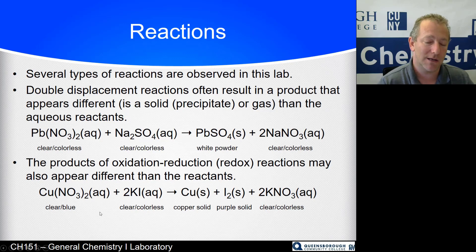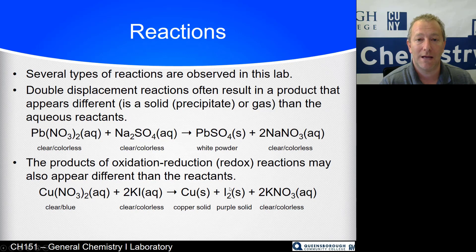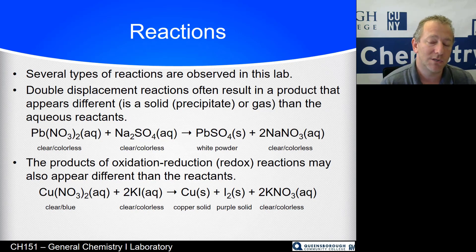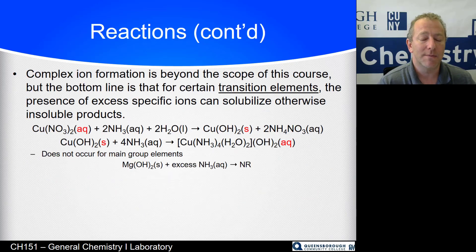It's redox because copper is +2 in copper nitrate (two nitrate ions at -1 each), potassium is +1, and iodine is -1 in potassium iodide. In the products, copper solid is zero charge off the periodic table, and iodine bonded to another iodine is also zero formal charge. Iodine went from -1 to 0, copper went from +2 to 0 — that change in oxidation number indicates an oxidation-reduction reaction has occurred, because redox reactions are electron transfer reactions.